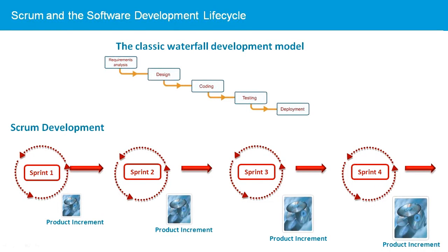Scrum is based on an iterative approach to the software development lifecycle. In Scrum, the project is broken up into development units called sprints. The sprint is a time-boxed iteration of the complete software development lifecycle. The sprint includes planning and analysis, design, development, test, and delivery of the product increment to the customer. The product increment is potentially shippable software that contains the highest priority functionality of all the requirements in the project.